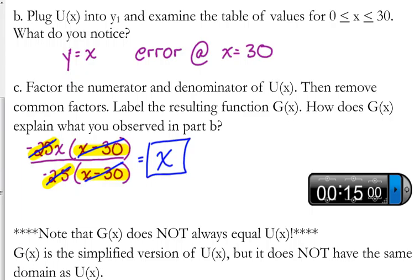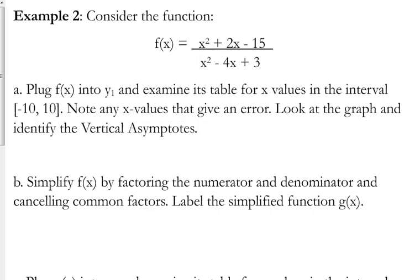So, I have a little note there. In this case, g of x does not always equal u of x. That means that they don't always have the exact same x and y values. Because, if we just plug in x, then we wouldn't get an error at 30. We would get 30 at 30. So, what I'm trying to say is, g of x is just the simplified version of that original function u of x and it does not have the exact same domain. It does not have the exact same domain. So, it is the simplified version, but it's not the exact same function.